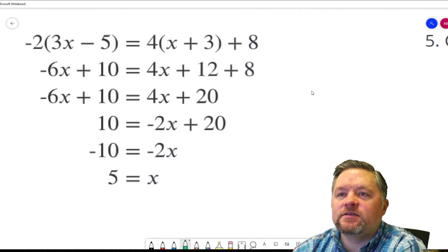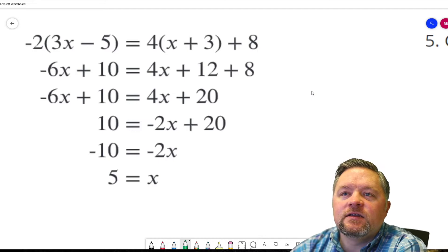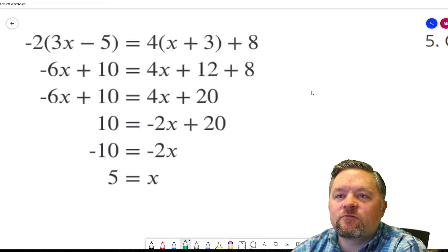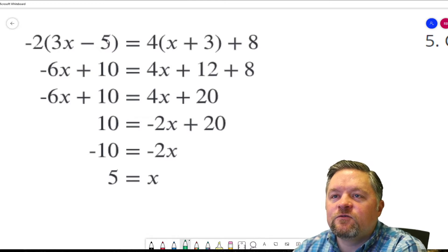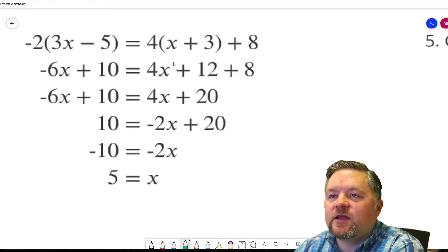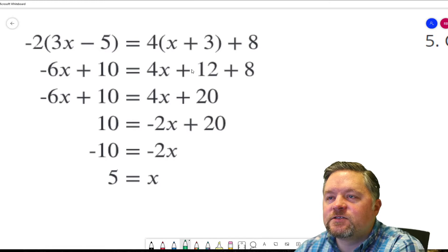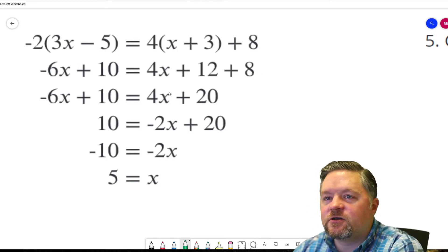Now, where is the oopsie? Negative 2 times 3x is negative 6x. I agree with that. Negative 2 times negative 5 is positive 10. 4 times x is 4x. 4 times 3 is 12, plus 8. That whole first step looks good to me.